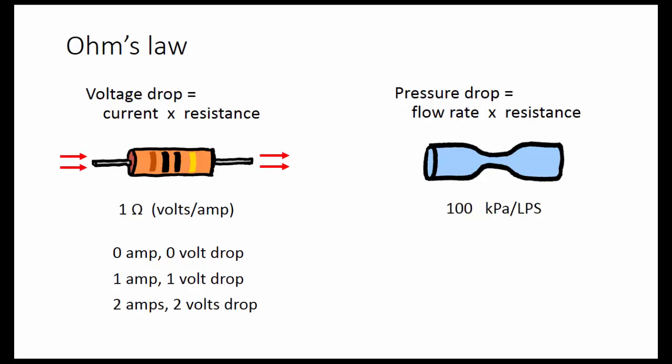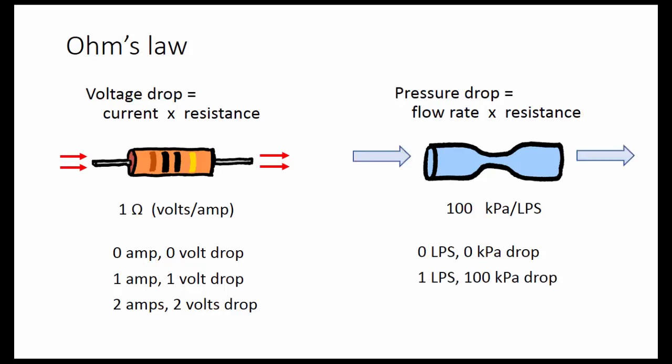This hydraulic resistor has a resistance of 100 kilopascals per liter per second. If there's no flow through the resistor, there is no pressure difference. If there's 1 liter per second flowing through, there's a 100 kilopascal drop. And if 2 liters per second are flowing through, there is a 200 kilopascal drop.